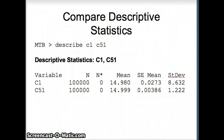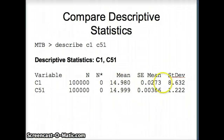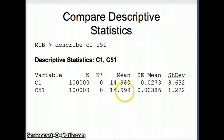Let's take a quick look at our descriptive statistics. C1 was from the uniform distribution — we have a mean of 14.98. If it's uniform from 0 to 30, you'd expect the mean to be about 15, and the standard deviation for C1 is 8.632. C51 is the column of averages: the average of averages is also about 15, but the standard deviation is much smaller. When we take averages, we expect the standard deviation to shrink and the numbers to get closer to each other.